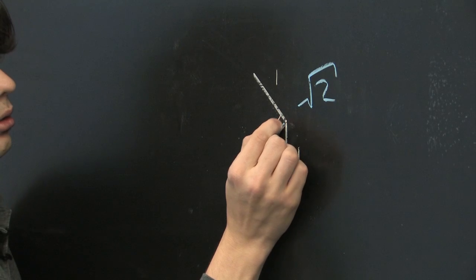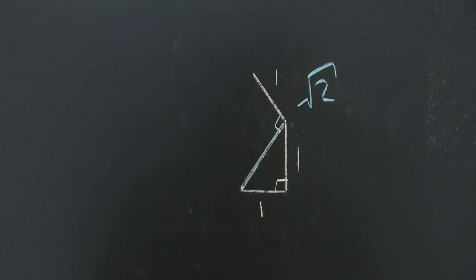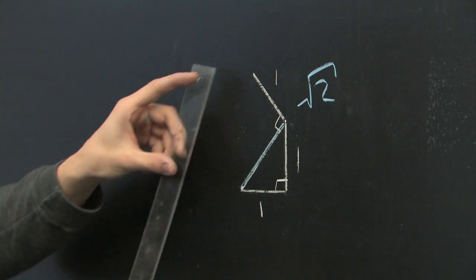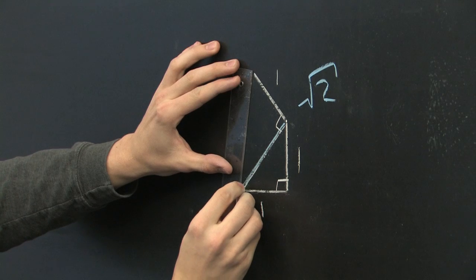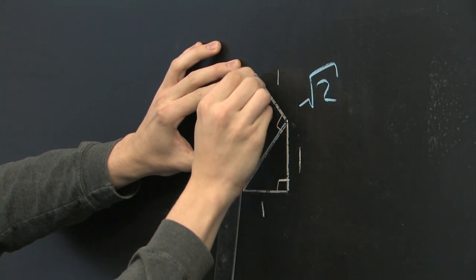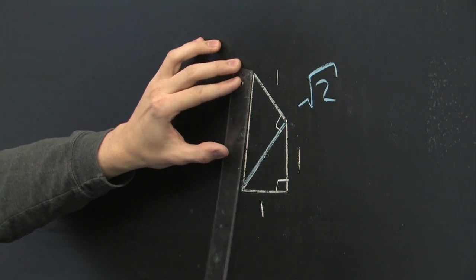So this will make another right angle here. And then we'll connect this point that's floating out here in space with this point down here. And you can see that makes another right triangle.